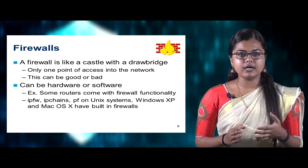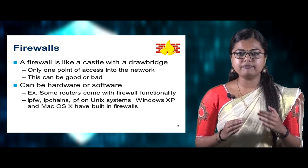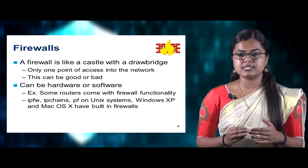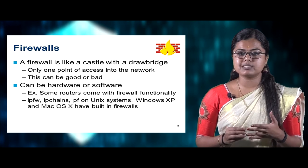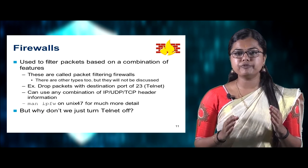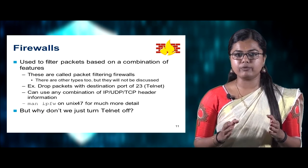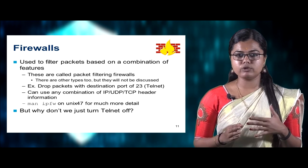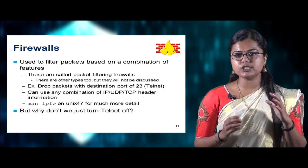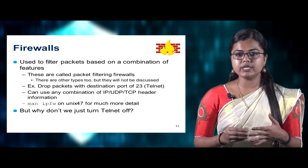A firewall can be either hardware or software. For example, some routers come with inbuilt firewall functionality, such as ipfw, ipchains, and pf on systems. Windows XP, Unix systems, and Mac OS X have inbuilt firewalls. A firewall is used to filter packets based on a combination of features — these are called packet filtering firewalls. There are other types as well; for example, they can drop packets based on the destination port number 23, which is Telnet.